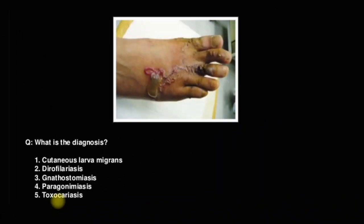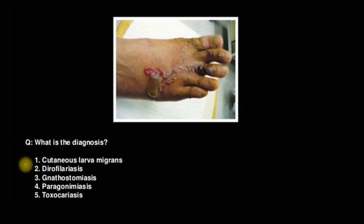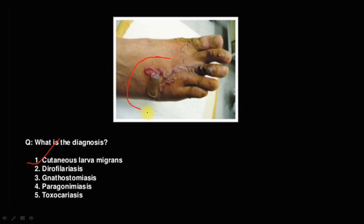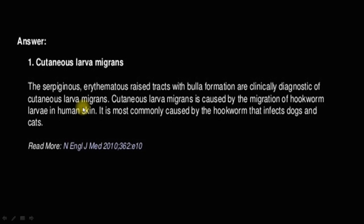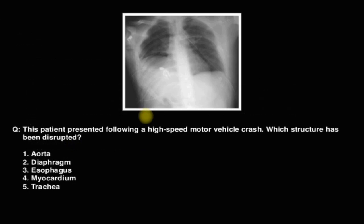What is the diagnosis of this patient? This is cutaneous larva migrans — an easy question. There is bulla formation visible, with the larval track visible near blood vessels. The serpiginous erythematous raised tract with bulla formation is clinically diagnosed as cutaneous larva migrans. It is most commonly associated with hookworm infection from dogs and cats. The organism is Ancylostoma braziliense.